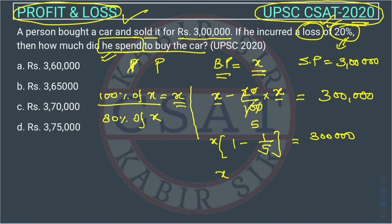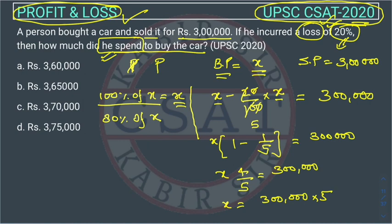Taking 5 as the LCM, 5 minus 1 gives us 4, so it becomes 4x/5 equals 3 lakhs. Then, bringing the 5 to the other side, x equals 3 lakhs multiplied by 5/4.